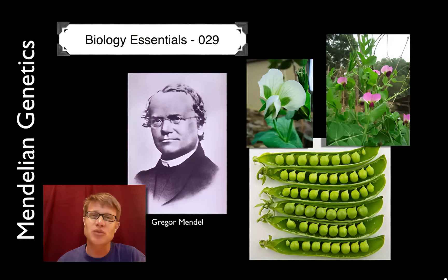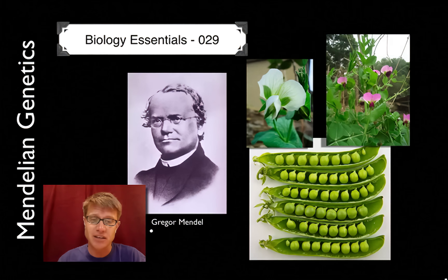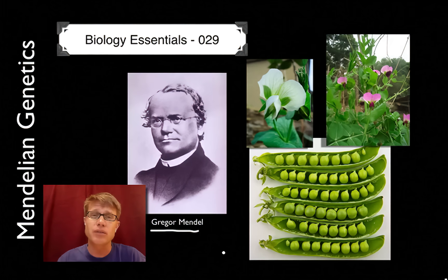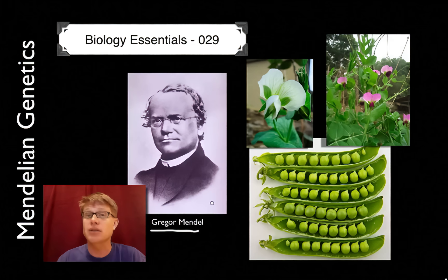Hi, it's Mr. Andersen and welcome to Biology Essentials video 29. This is on Mendelian genetics, named after Gregor Mendel. In biology there are two famous names: Darwin, who was famous and controversial in his own time, and Gregor Mendel, who died in obscurity. But both of them made huge advances in the field of biology, and Gregor Mendel in the area of genetics.